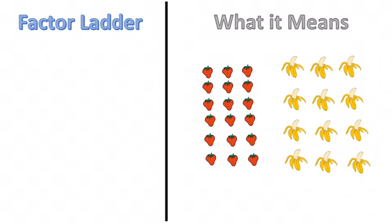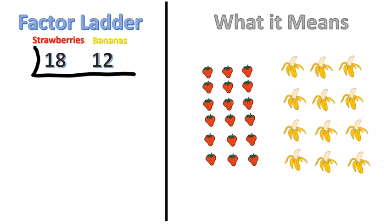Now we can use a factor ladder to figure that out. We start with the amount of fruit of each. So we have 18 strawberries and we have 12 bananas. And then using the factor ladder which looks kind of like an upside-down division house, we look at 18 and 12.